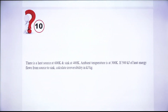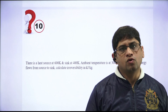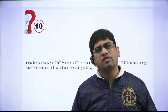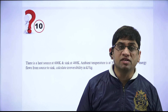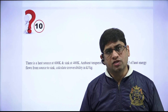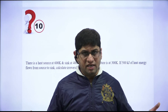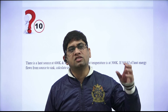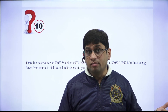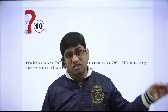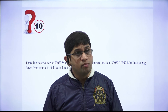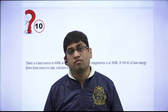Question 10: A heat source is maintained at 600 K, the sink (ambience) is at 400 K, T0 = 300 K, and Q = 500 kJ flows from source to sink. Calculate the irreversibility. Heat flow through a finite temperature difference is a natural irreversible process. These 10 questions cover all major cases of entropy change: available energy, unavailable energy, availability, and irreversibility — all rooted in entropy change calculation.